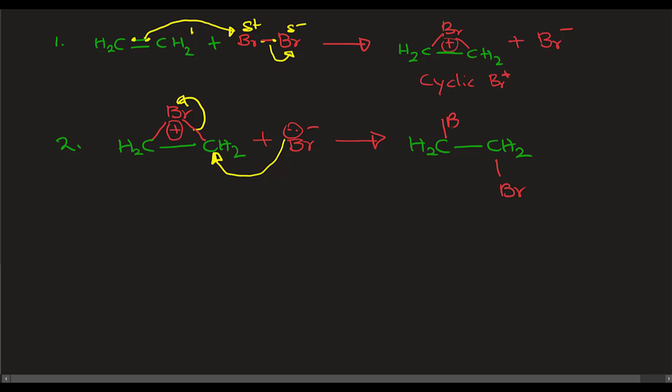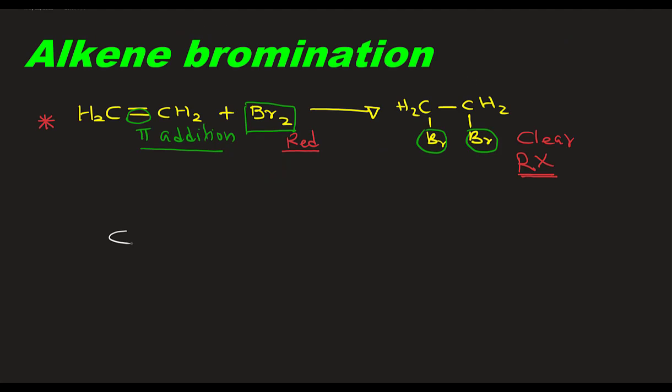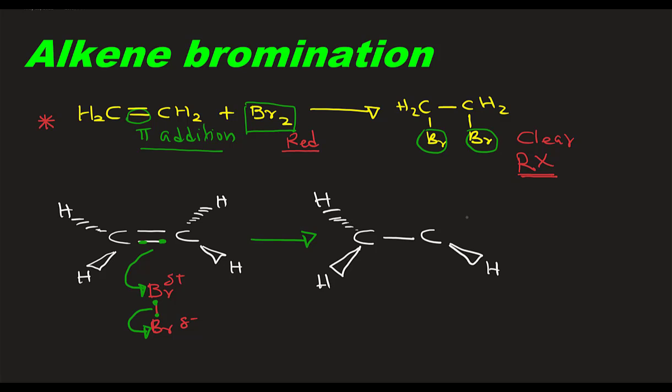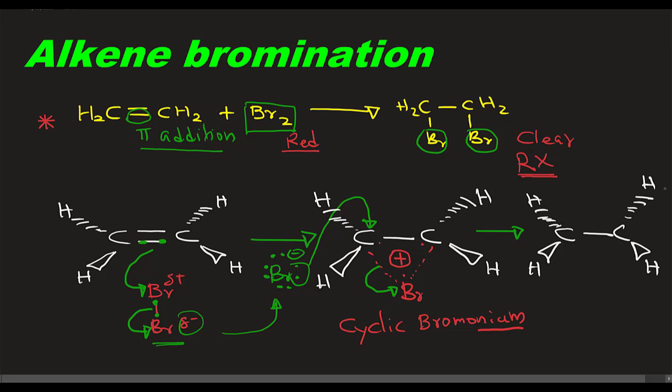So this can be an example of the ethyne with bromine. The cyclic bromonium ion formation leads to anti-addition. The bromide and bromine are on different carbons. This is the anti-addition process.